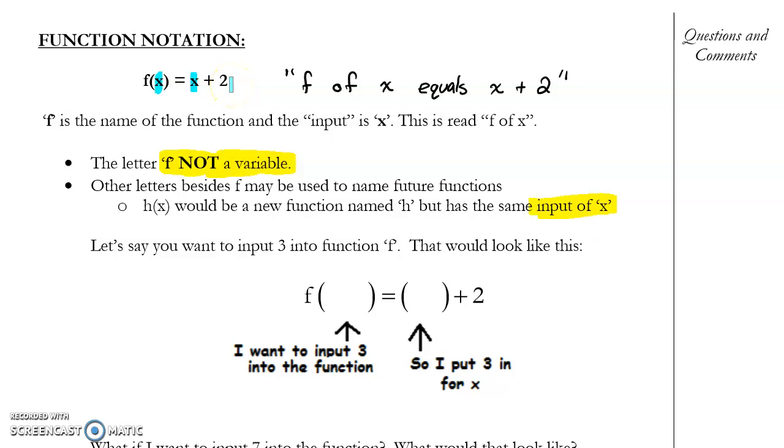So, for example, let's say we want to input 3 into a function that we're calling f. This is what it's going to look like. Since I am inputting 3, that's a way of saying my x is 3. I'm going to put it here, and instead of this being f of x, I say f of 3. So, it's saying use function f and input 3.